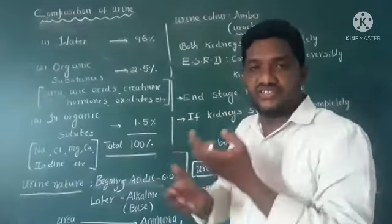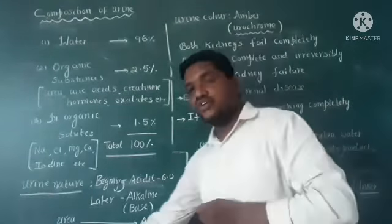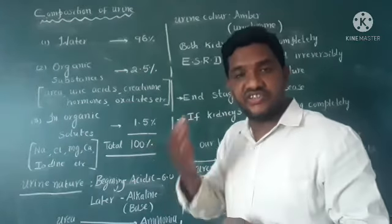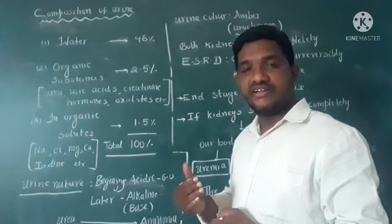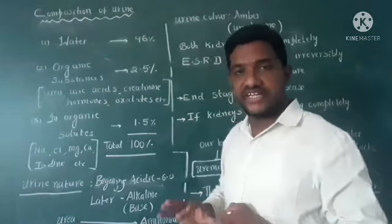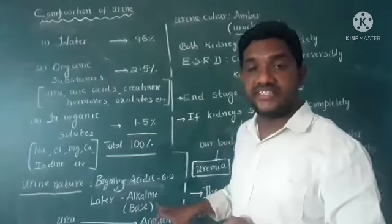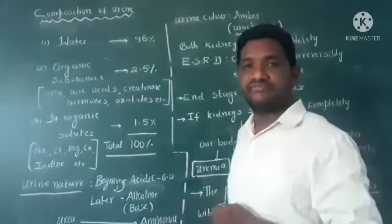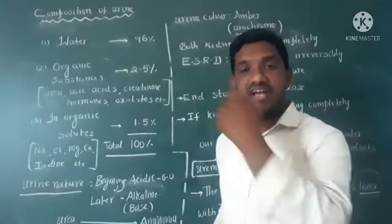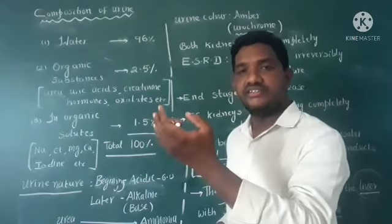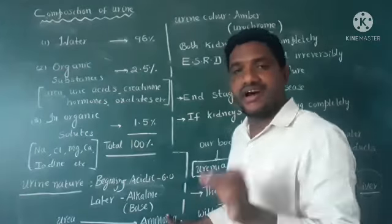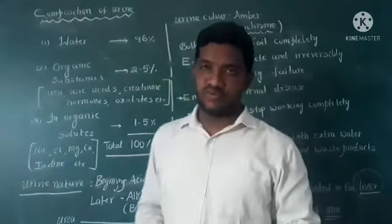Later, the composition gradually changes. Urea is converted into ammonia. When urea changes to ammonia, the nature of urine also changes — from acidic to alkaline in nature. So at the beginning it is acidic, and gradually the pH value changes and it becomes alkaline.